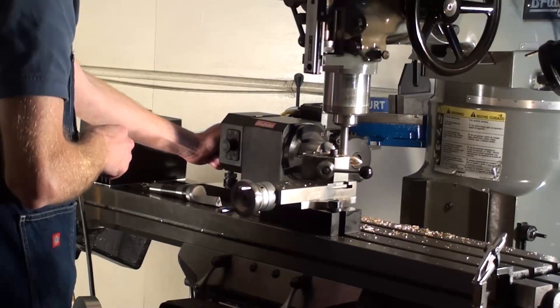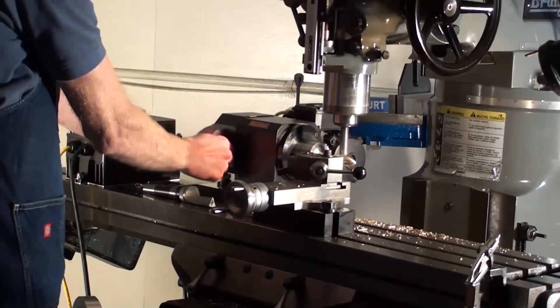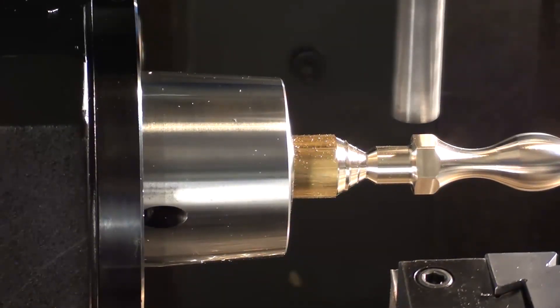Parts made with the Sturgis turning head system are indistinguishable from parts made on a CNC lathe. Same accuracy, same repeatability, same quality.